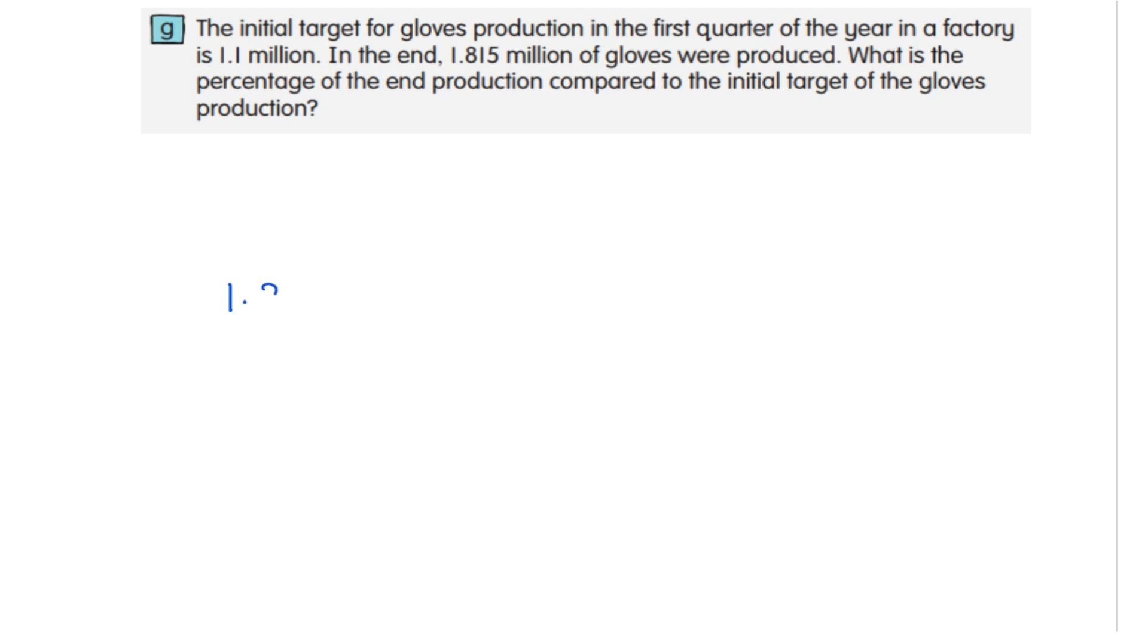To find the percentage of the end production, the end production is 1.815 million compared to initial target. Initial target is 1.1 million. The question wants you to find percentage, so you have to multiply with 100%.